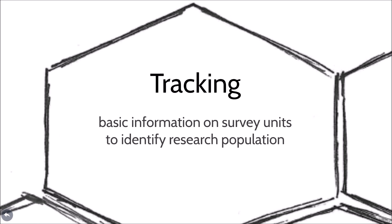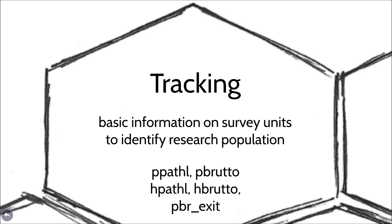Tracking datasets contain basic information on survey units. We recommend using these datasets to identify the research population. P-Path-L contains the entire survey biography of all individuals who have ever lived in a SAP household. H-Path-L contains the same information on the household level. The corresponding H and P-Brutto datasets contain information on sampled households or individuals who we wanted to interview or re-interview, but who did not provide an interview.